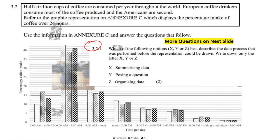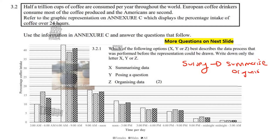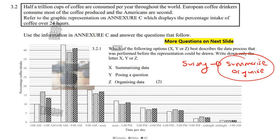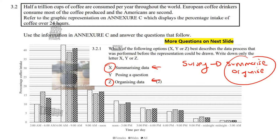The first question asks: which of the following options — X, Y, or Z — best describes the data process that was performed before the representation could be drawn? Write down only the letter X, Y, or Z. Obviously, if they want to find out who drinks coffee, they would have to go to people and do a survey — you would walk around randomly. Then people would tell you how much coffee they drink, and you would have to take all of that information and summarize or organize it. Once you've summarized and organized it, then you can draw it. I checked on the memo, and both X and Z are actually taken as correct.